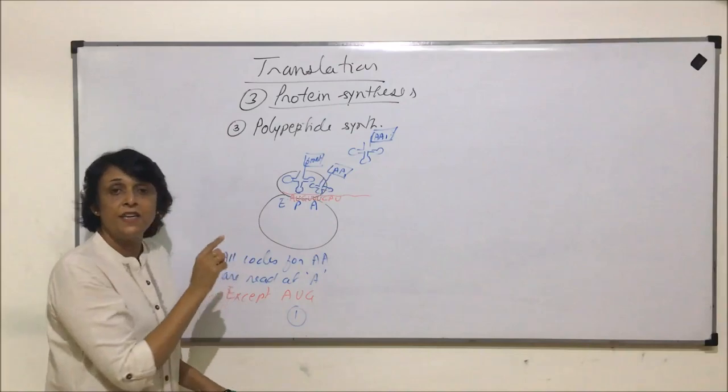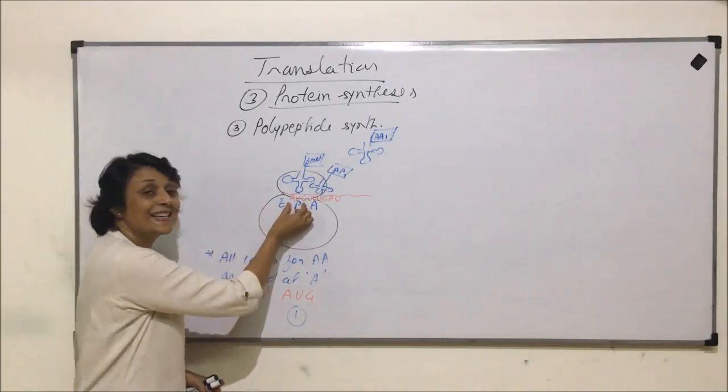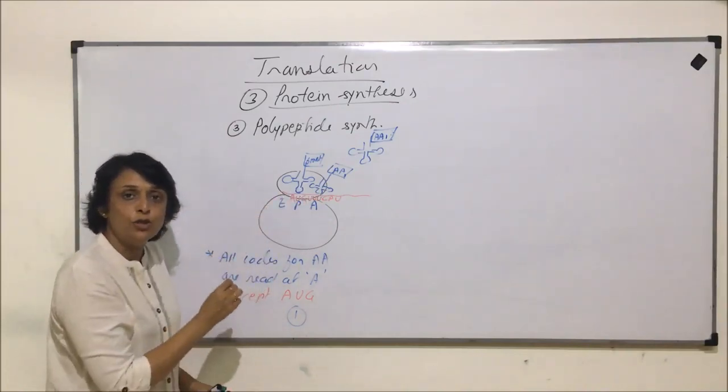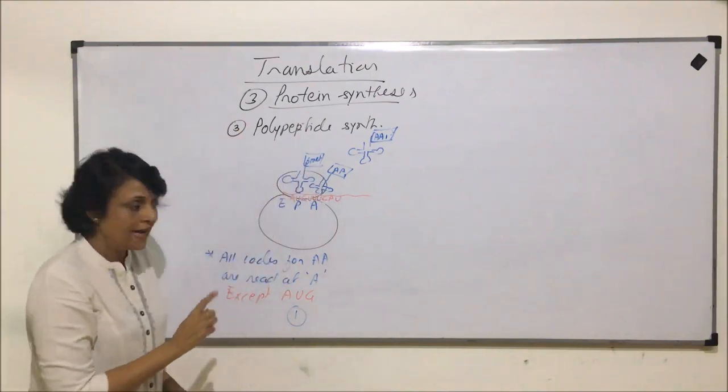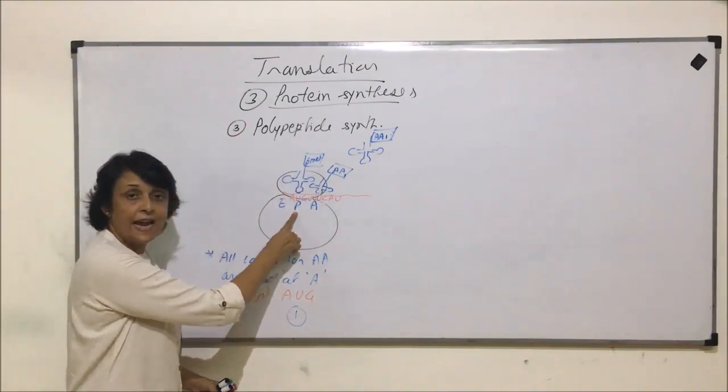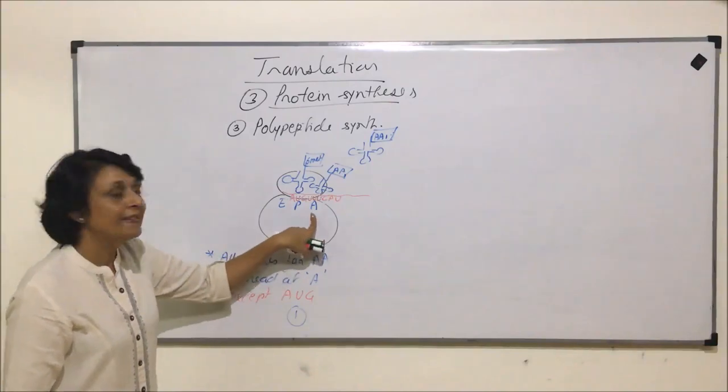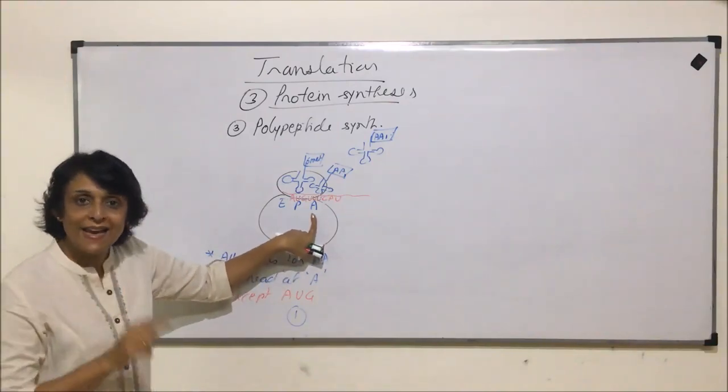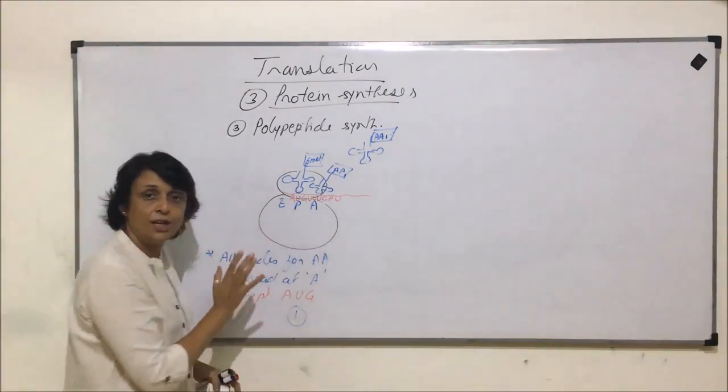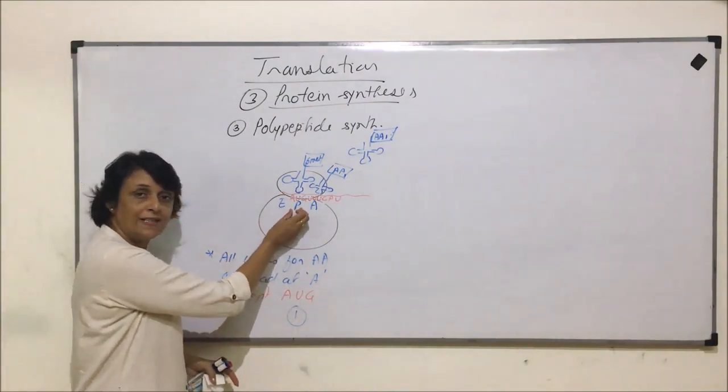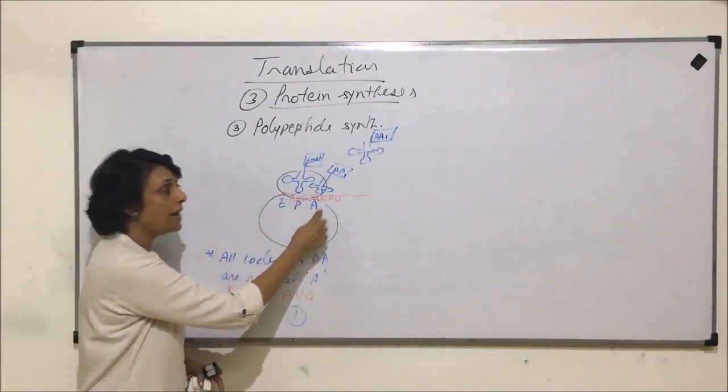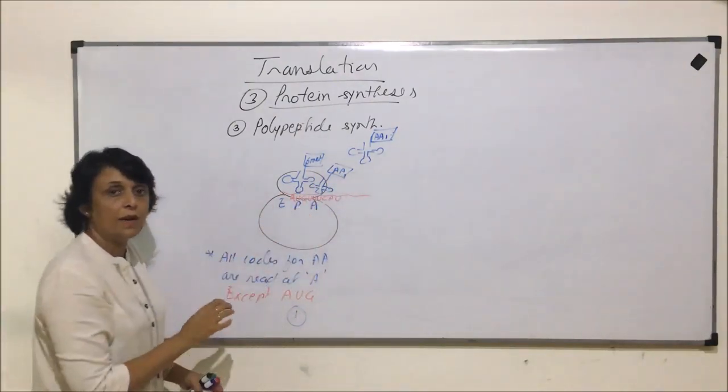The first tRNA which has read the code AUG for FMET can come and bind at site P. All other tRNAs, they read the code at site A and can come and bind here. First one binds at P, A is free. So the second one comes here. Now this ribosome moves on mRNA.